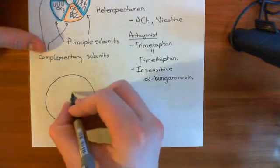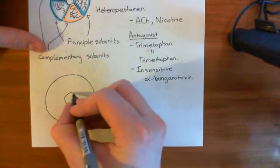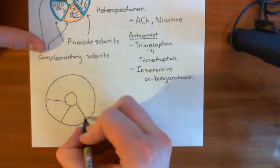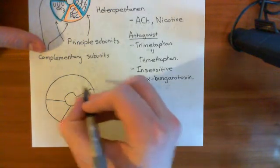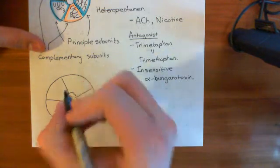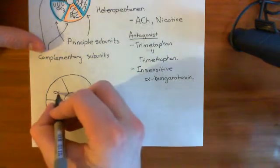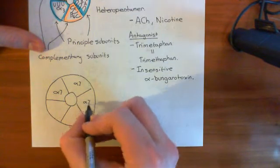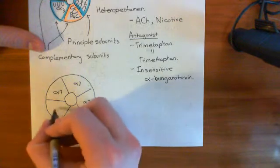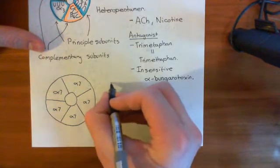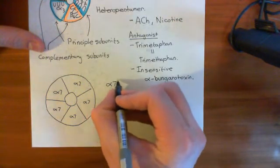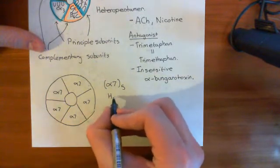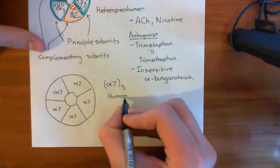So we'll start off again with our cartwheel drawing, and in this case, every single one of these protein subunits that makes up this nicotinic acetylcholine receptor will be the alpha-7 subunit. So you'll have alpha-7, alpha-7, alpha-7, alpha-7, and then this last one, just for a change, will be alpha-7. So this is the alpha-7-5-homopentamer, because you've got the same thing in all five slots.